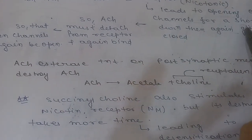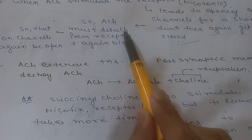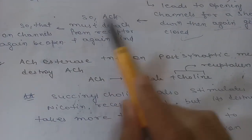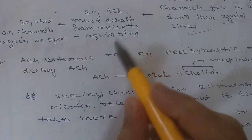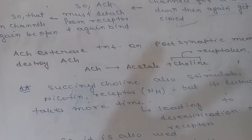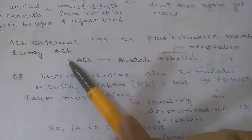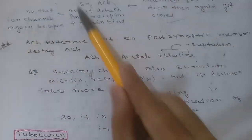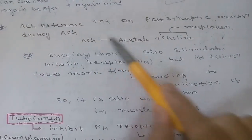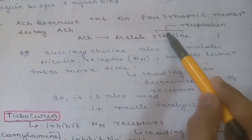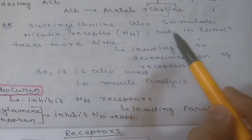When acetylcholine stimulates nicotinic receptors, ion channels open briefly and then close again. Acetylcholine must detach and re-bind to reopen the channel. Acetylcholinesterase present on the post-synaptic membrane destroys acetylcholine, converting it into acetate and choline; choline is then reuptaken by the sodium-choline transporter.